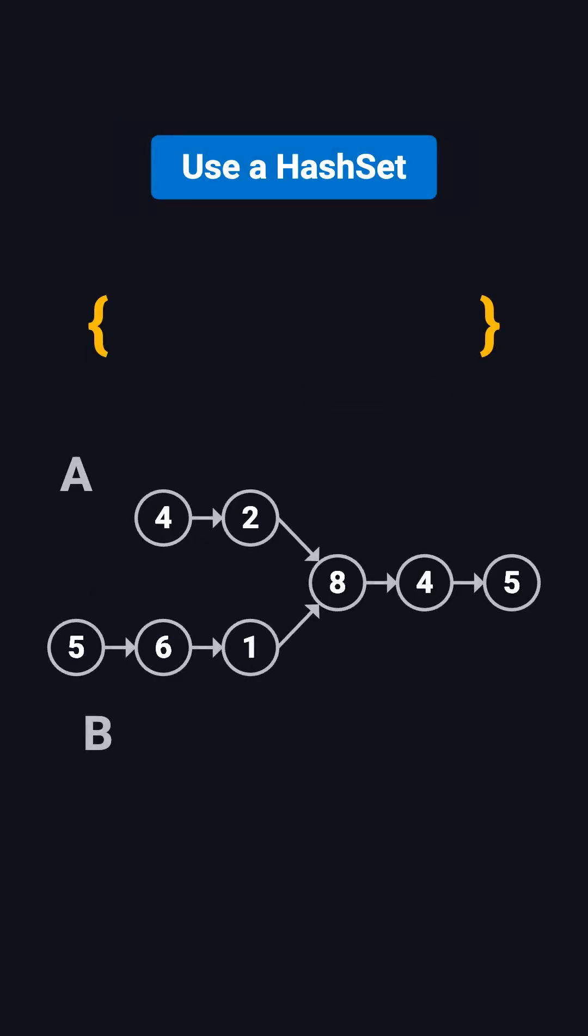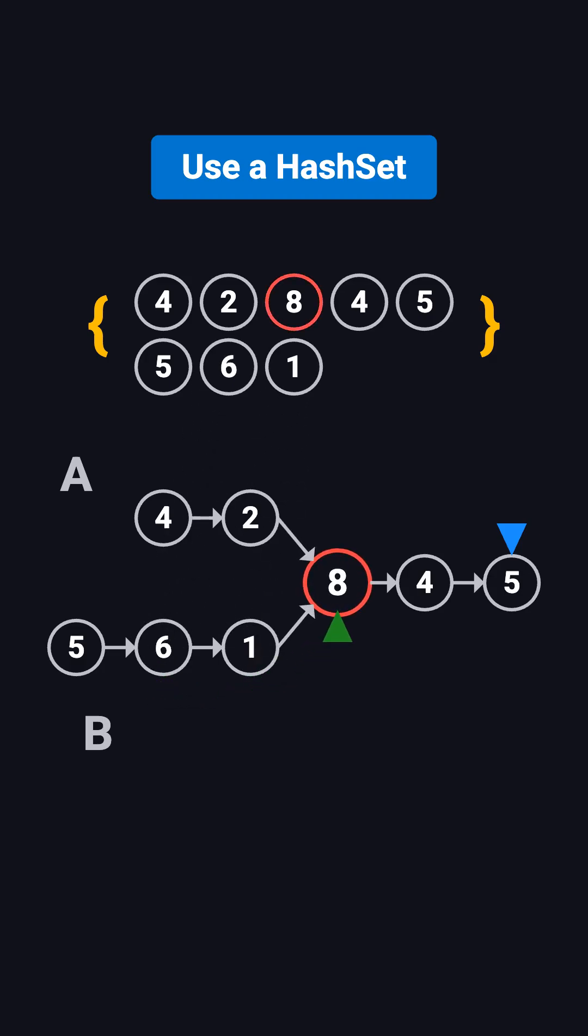The most straightforward idea is to use a hash set. First, we traverse list A and put every node into the set. Then we traverse list B, and if we ever find a node that's already in the set, that's our intersection.